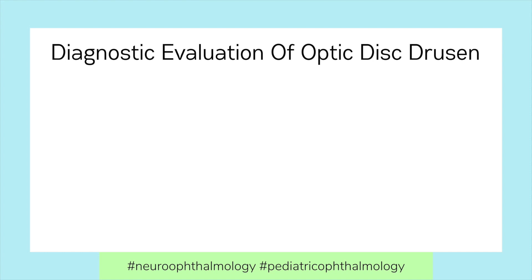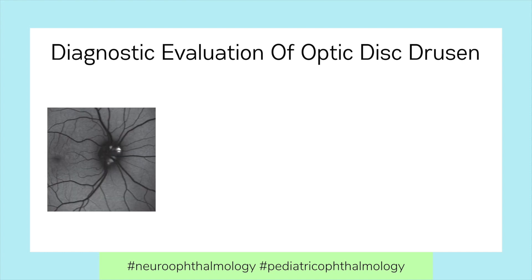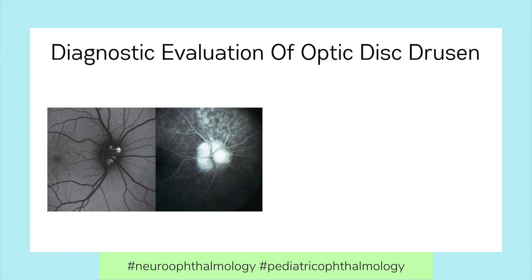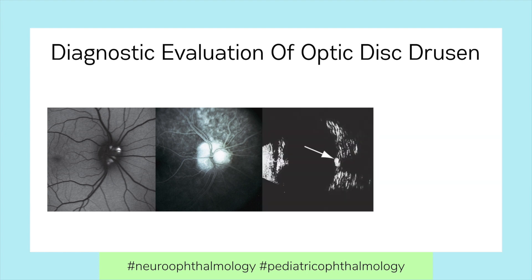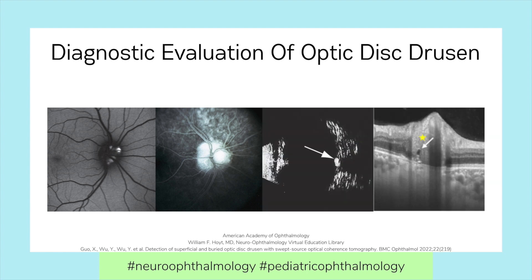The main goal of diagnosing Optic Disc Drusen is to differentiate it from true optic nerve edema. There are four ancillary testing modalities that assist in evaluation: autofluorescence, fluorescein angiography, B-scan ultrasonography, and optical coherence tomography. While not all of these tests are necessary for diagnosis, they are helpful when confronted with optic nerves that could be swollen or have Optic Disc Drusen.